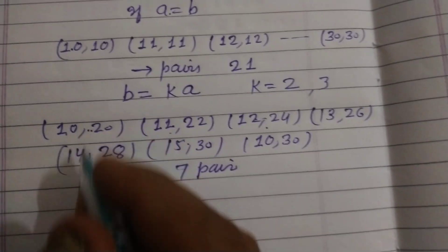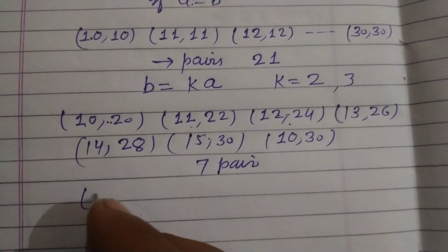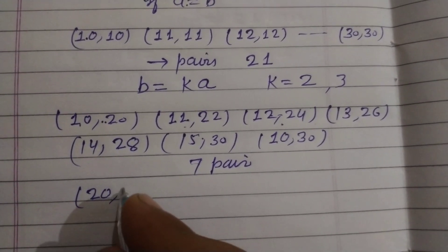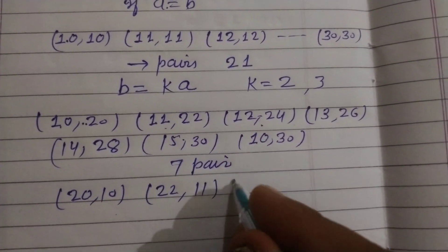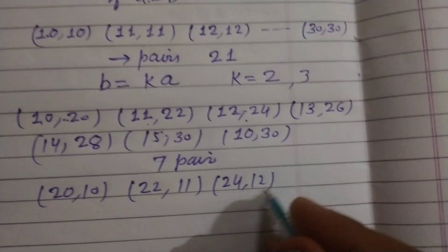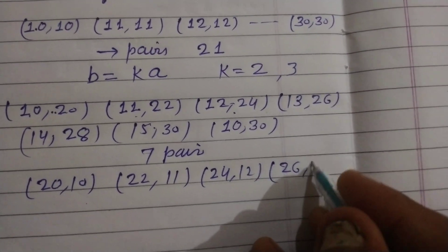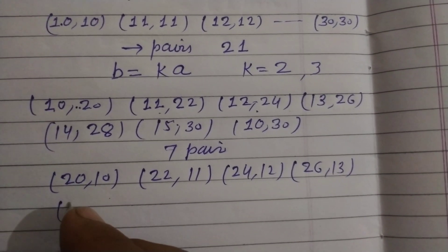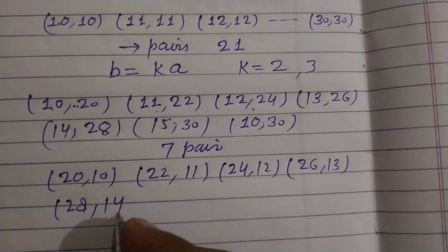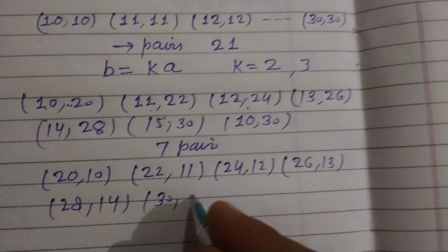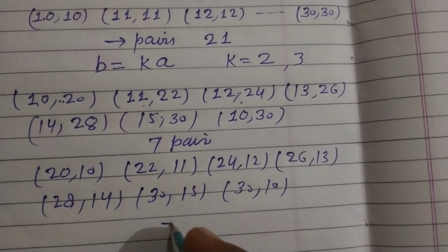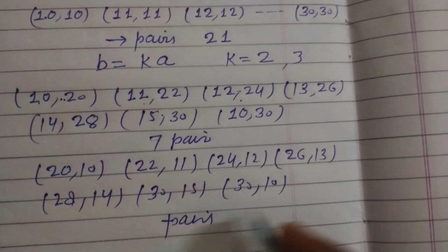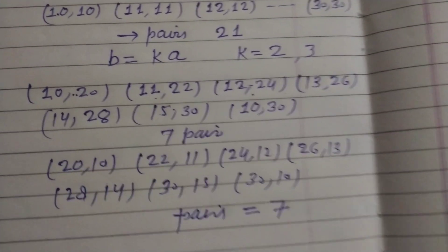If we reverse the order of these, then we get (20, 10), (22, 11), (24, 12), (26, 13), (28, 14), (30, 15), and (30, 10). So 7 pairs are also formed by reversing the order.